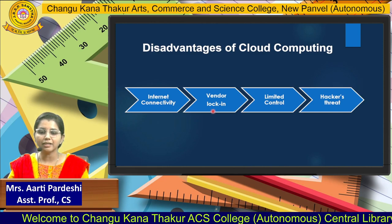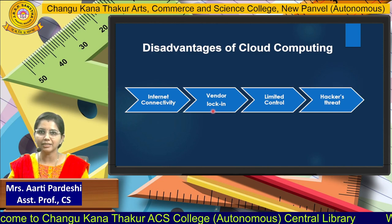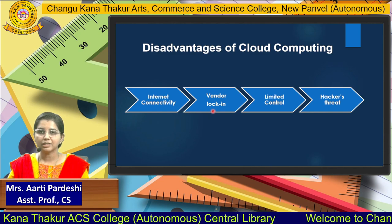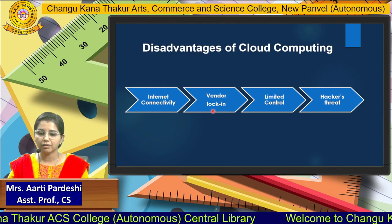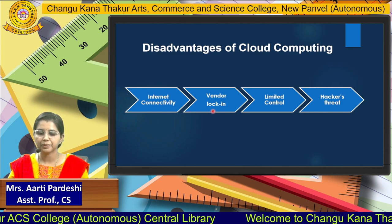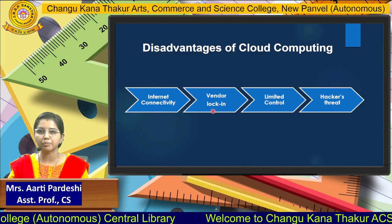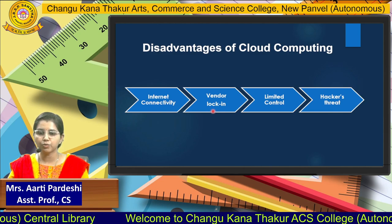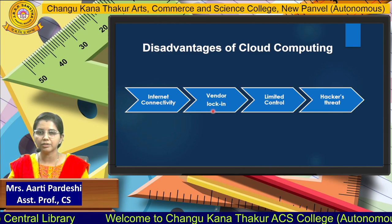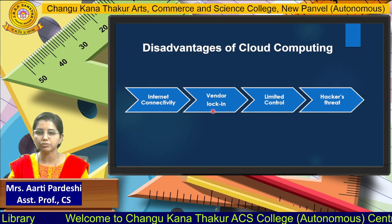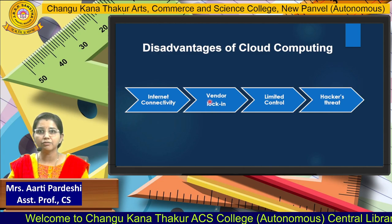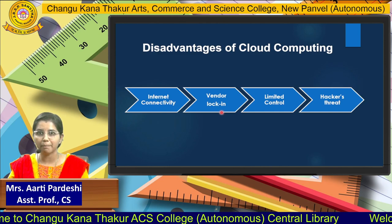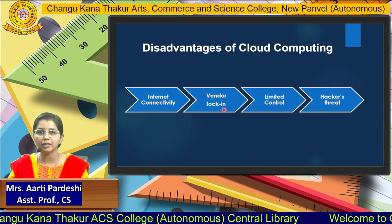The second disadvantage is vendor lock-in. Cloud belongs to a specific vendor — for example, Google is providing Google Cloud, Microsoft is providing Azure, and Salesforce is also there. Different types of cloud belong to their respective vendors, and the vendor gives you specific purchase options. This is why it is called vendor lock-in.